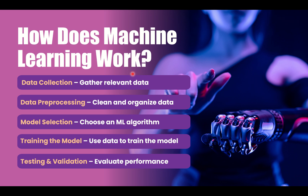We have done our first two steps — we collected the data, we processed the data, then we select the model, we train the model, and then we test and validate the model. These are the basic steps to train any machine learning model. Once you perform all these steps, the next step is to deploy the machine learning model on any online server, any cloud platform, or on your own machine, and then you can use it for your needs.